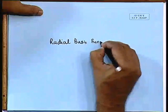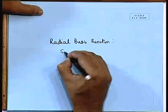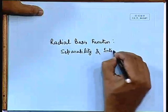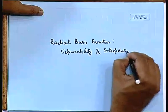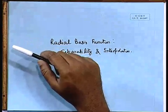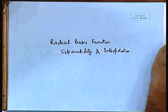We are going to cover the aspects of separability and interpolation in radial basis functions. Before we go into this, we need to quickly summarize what we did in our last lecture. In the last lecture, we introduced the radial basis function. First, it is a multilayered perceptron, but the problem is formulated in an interpolation way, not in a stochastic approximation way.